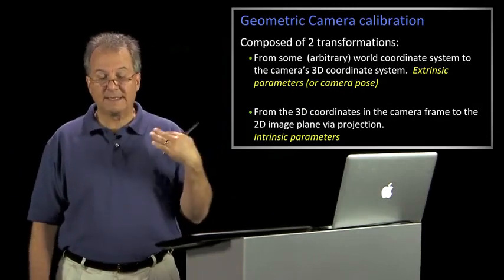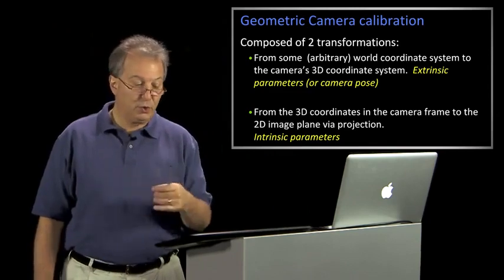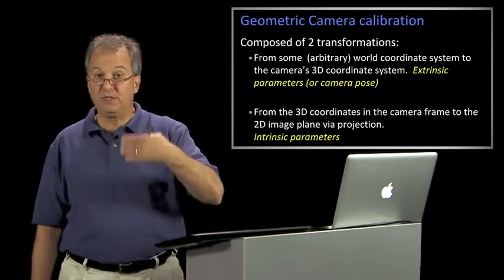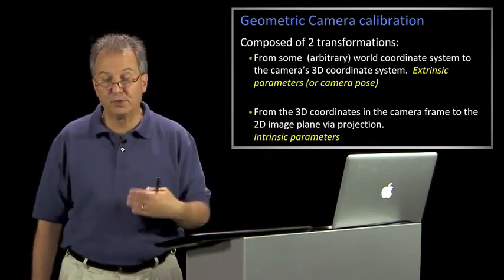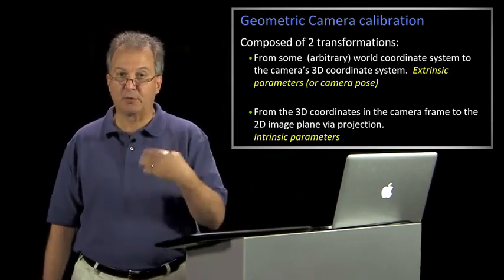Today we're going to talk about the second transformation, which goes from the 3D camera coordinates to the 2D image coordinates, or the 2D image plane. And these are referred to as the intrinsic parameters. And we'll again come up with an intrinsic parameter matrix.